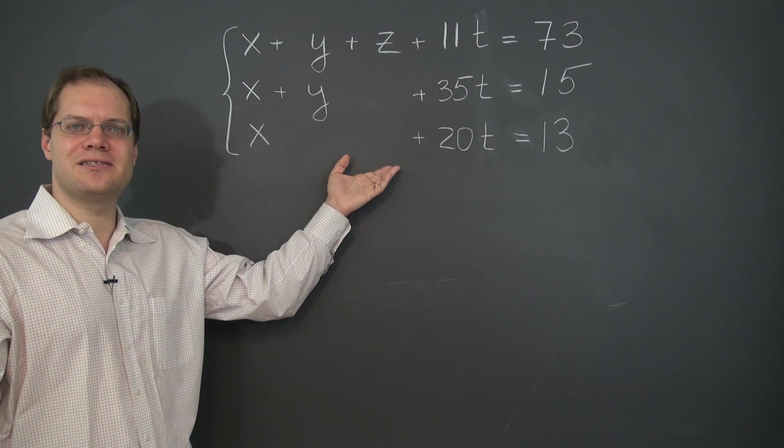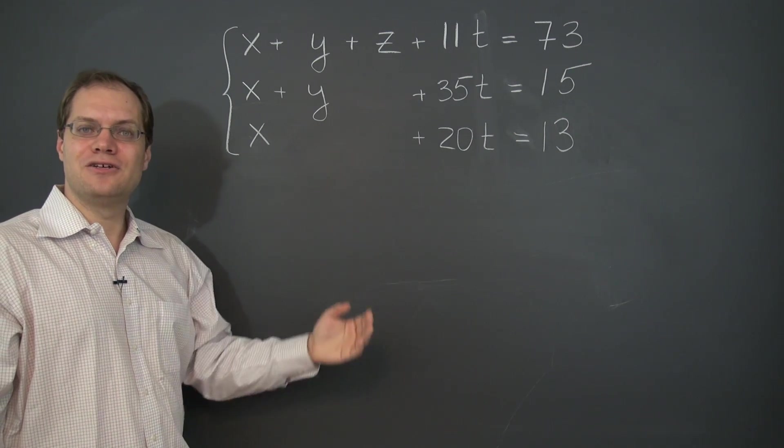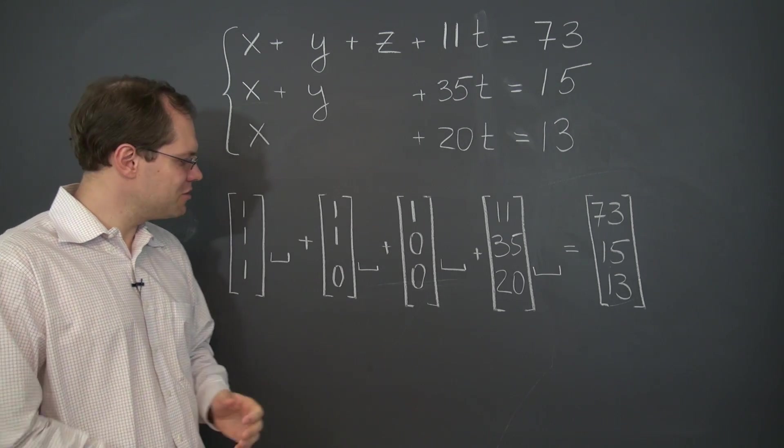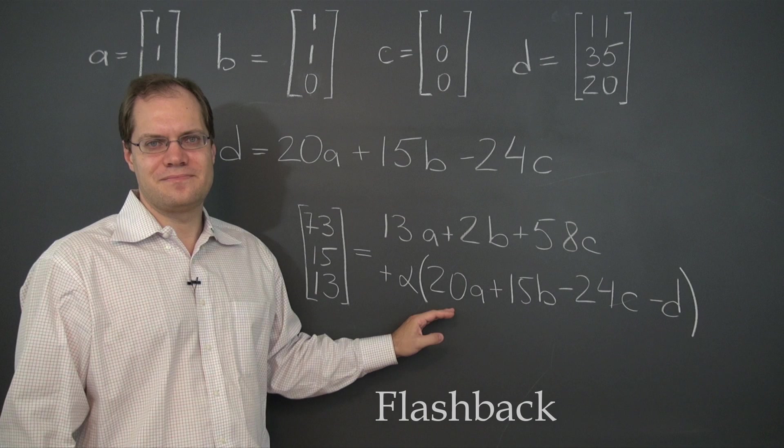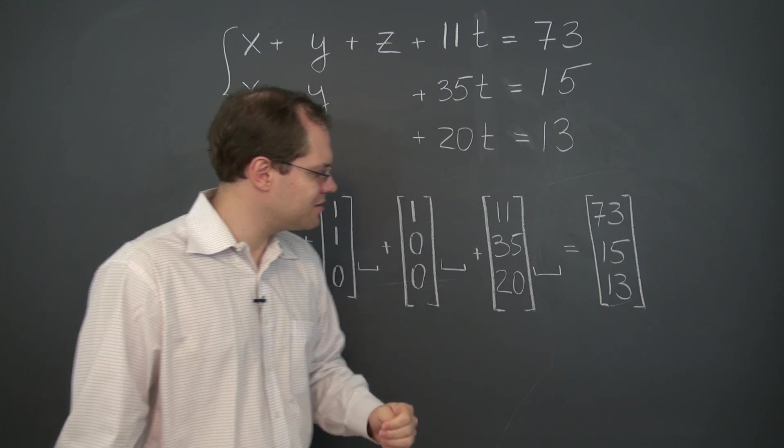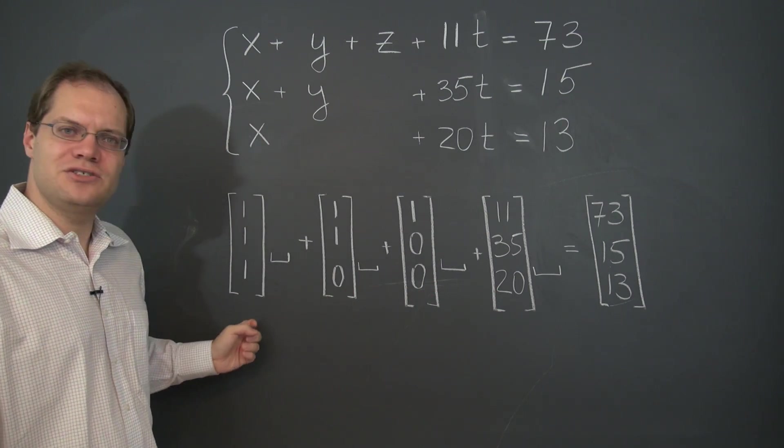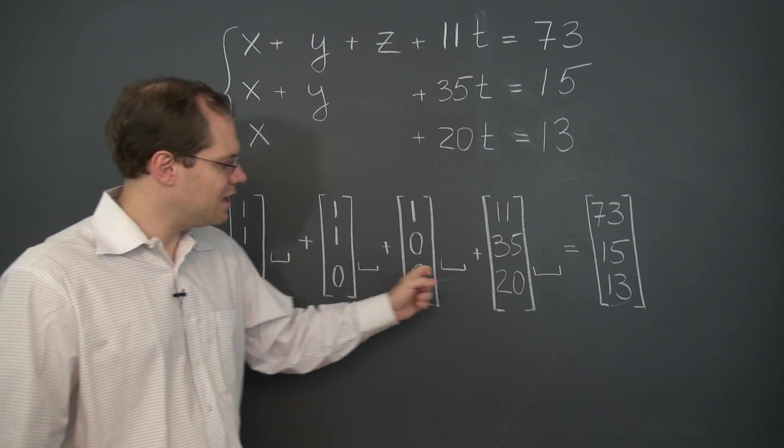Take a look at this linear system and compare it to this problem. Does it look familiar? It should. We just considered it in the previous video. It looks a little bit differently, it's arranged a little bit differently on the board. But it's still the problem of decomposing this vector as a linear combination of these four, with four unknown coefficients.